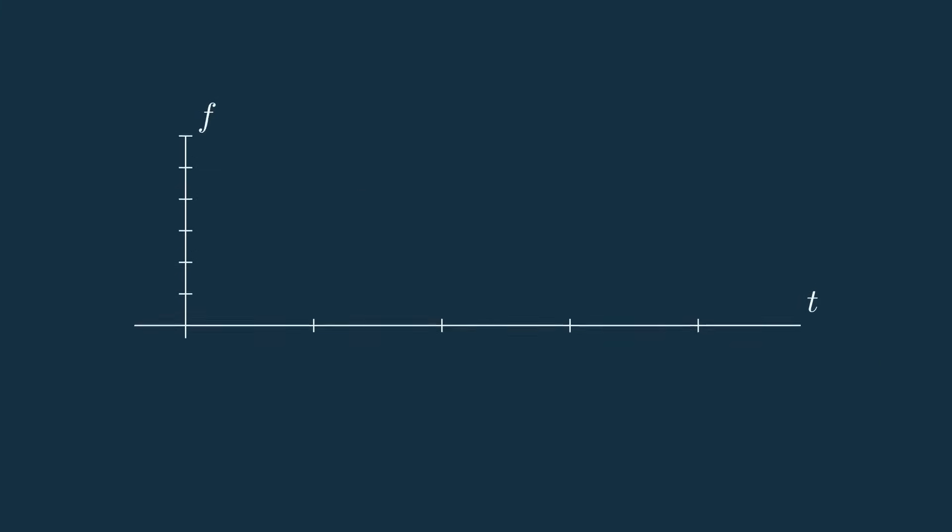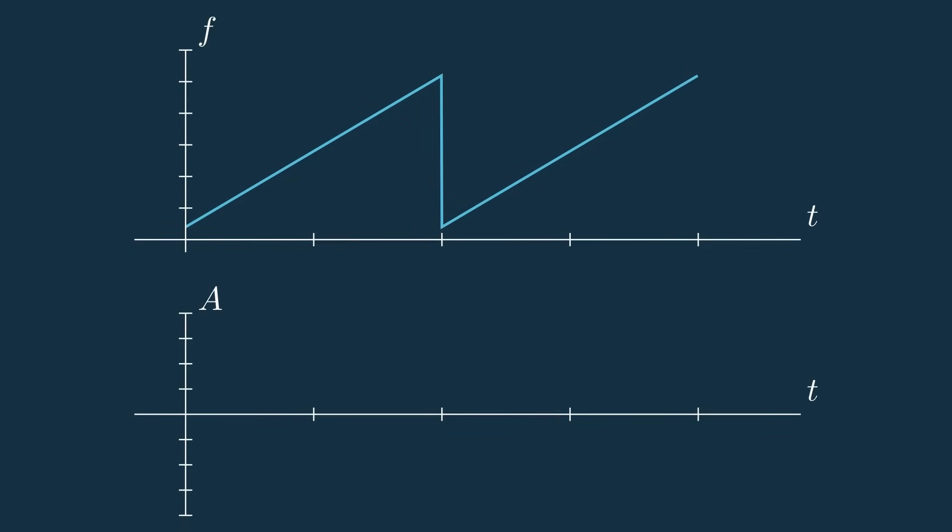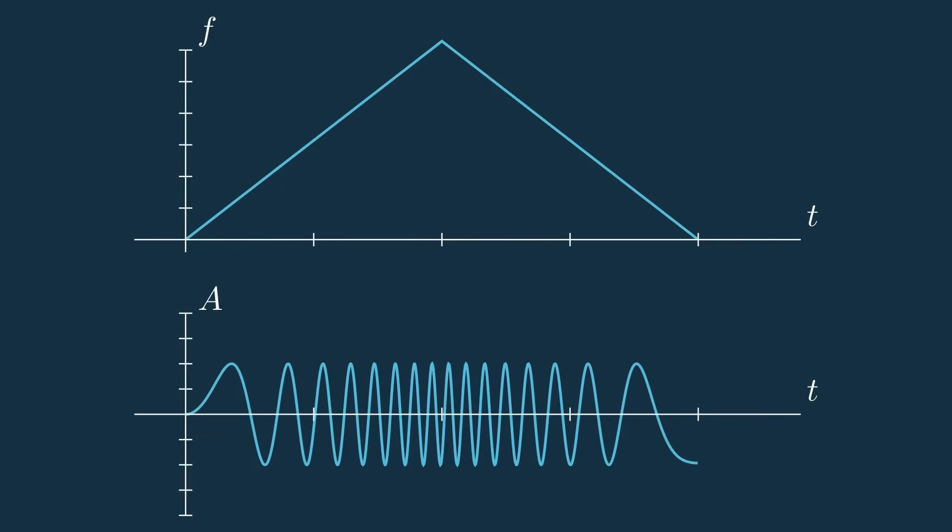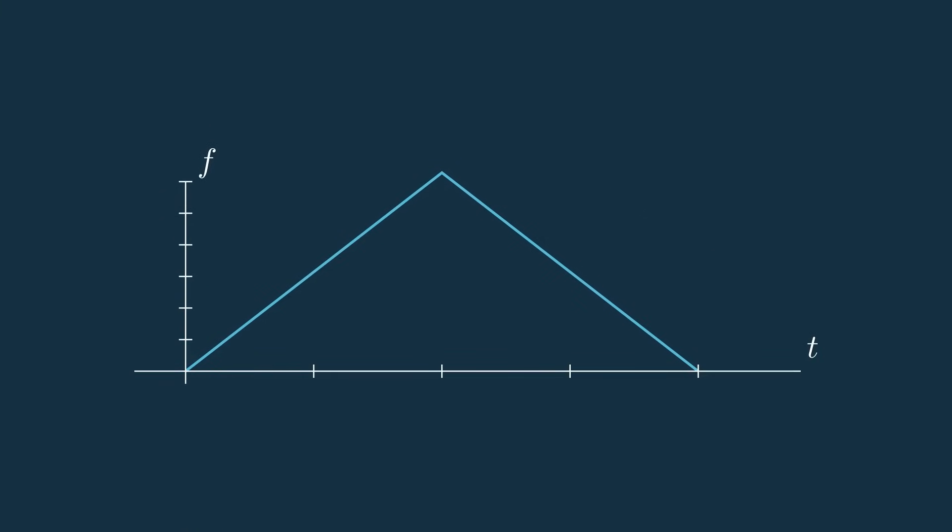In my previous video on this topic, we talked about the sawtooth modulation technique where this is its frequency over time and this is its amplitude over time. But let's try out triangular modulation. These first few steps will look exactly the same as what we did with the sawtooth modulation, but then we'll see what new information adding this downramp affords us.